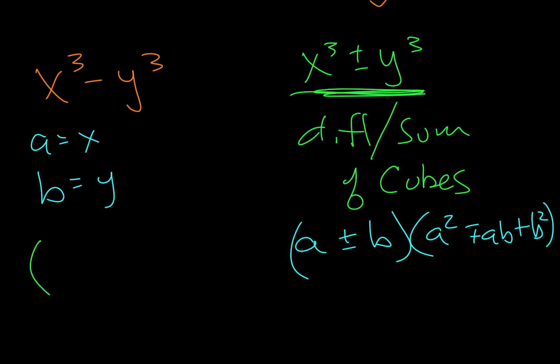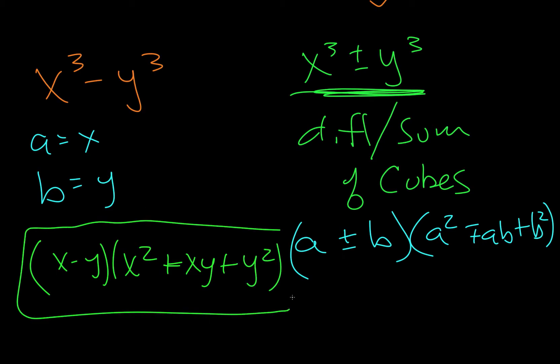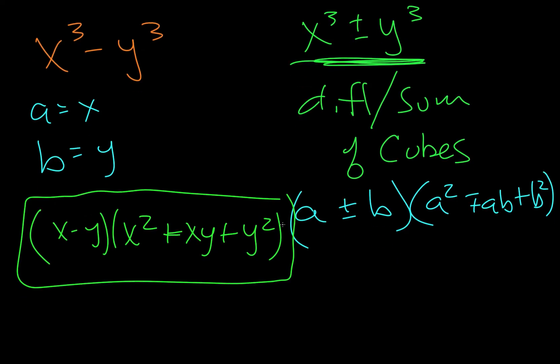So I just do a minus b, so I do x minus y. And then a squared, which would be x squared. Now I'm following the bottom, so I choose the plus sign. And then we do a times b, so x times y, or xy. This one's always a plus sign. And then b squared, which would be y squared. Okay. And that's everything on that problem.